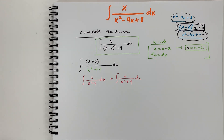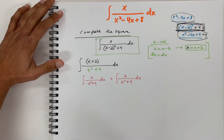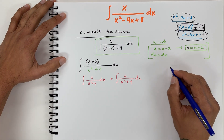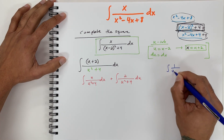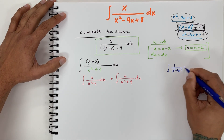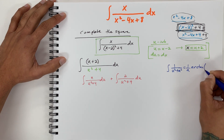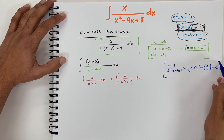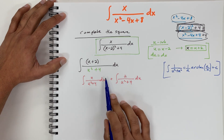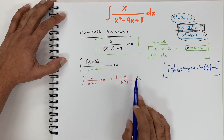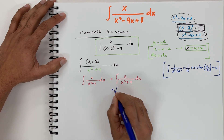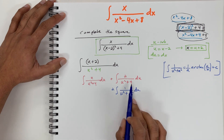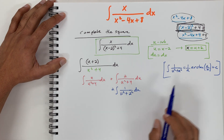Now it looks like we can solve something. I know that the integral of 1 over (u squared plus a squared) equals 1 over a times arctangent of u over a, plus C. I have something similar here — I just take out the 2 and write 4 as 2 squared, giving the integral of 1 over (u squared plus 2 squared).